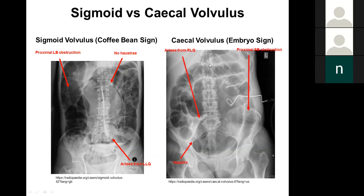On the sigmoid volvulus example: a large coffee bean with its seam arising from the left lower quadrant, no haustra visible along the edges, and dilated proximal large bowel confirm sigmoid volvulus. On the cecal volvulus example: the embryo shape with the head-like curve arising from the right iliac fossa, haustra visible in a few places, dilated small bowel loops with valvulae conniventes visible, and collapsed large bowel throughout confirm cecal volvulus.